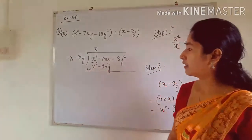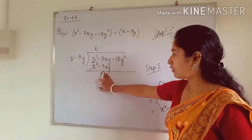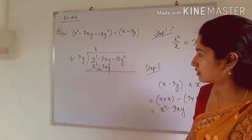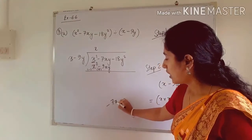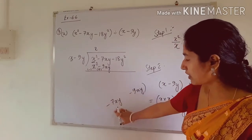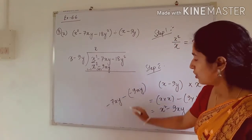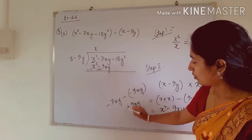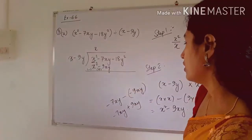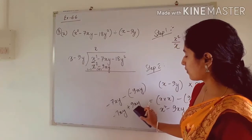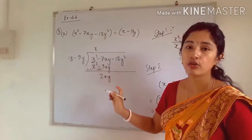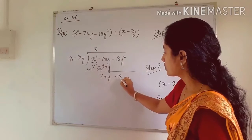We subtract: when the sign changes from minus to plus, −7xy − (−9xy) means we write it as −7xy + 9xy. This gives +2xy. So we write +2xy, and bring down −18y² below, giving a new dividend of 2xy − 18y².